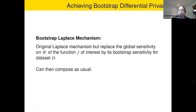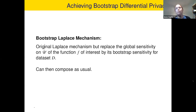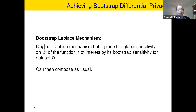So how do we achieve bootstrap differential privacy? One of the ways to do that is by modifying slightly the Laplace mechanism. This is the only one I'll be talking about today and the one we looked at mostly in the paper, but you could imagine other ways of doing it. It's very simple — basically you look at the Laplace mechanism, but instead of computing the global sensitivity, you compute the bootstrap sensitivity for the data set that you have. Then you can compose as usual if you'd like to do different things with the Laplace mechanism.